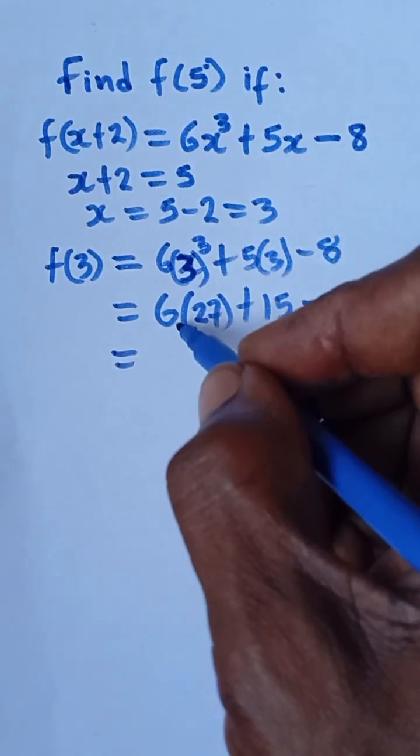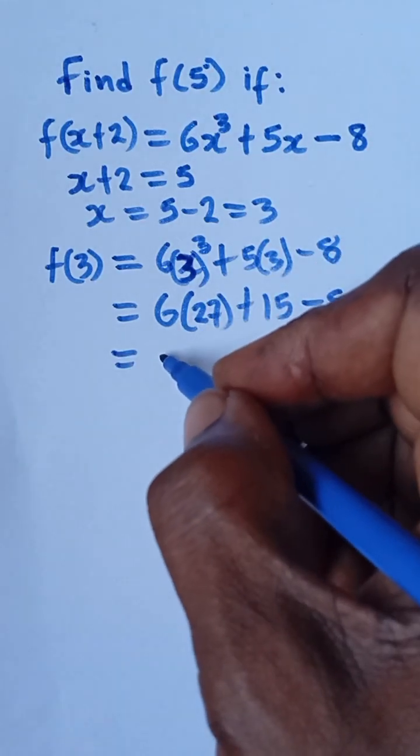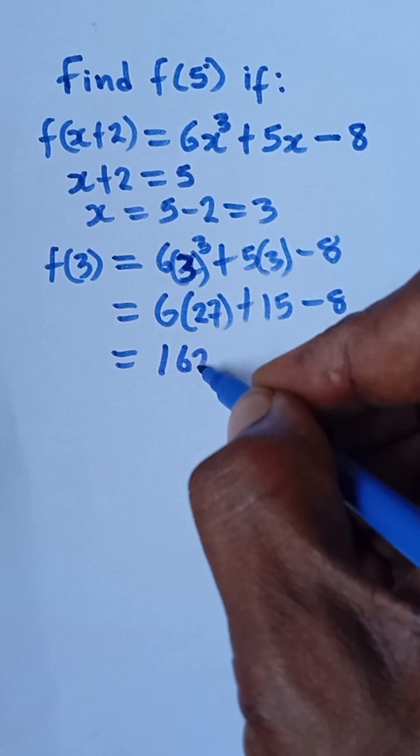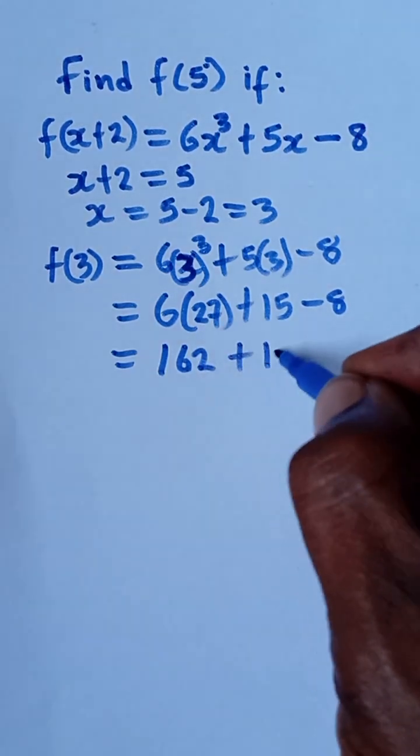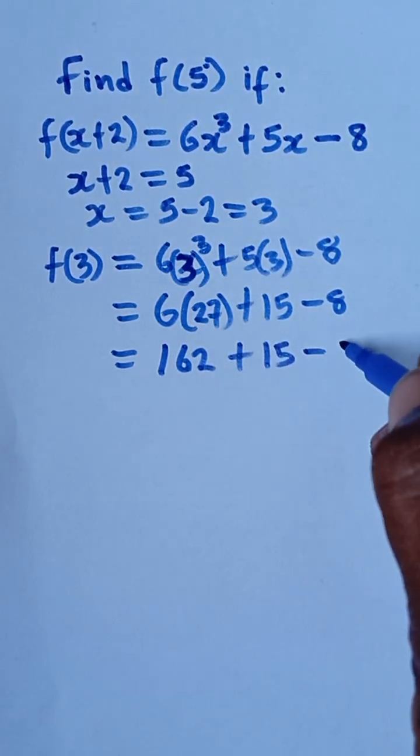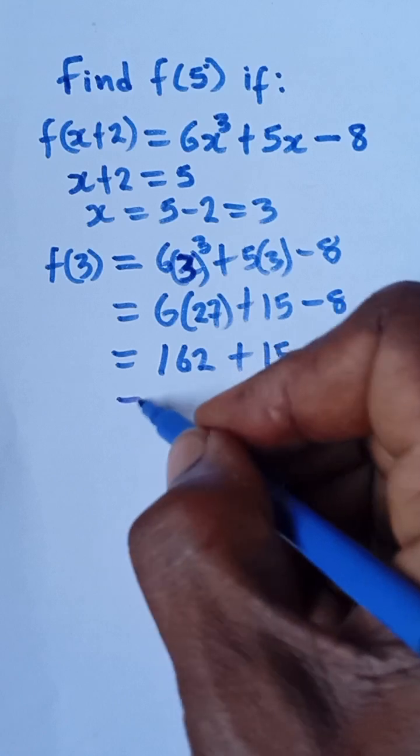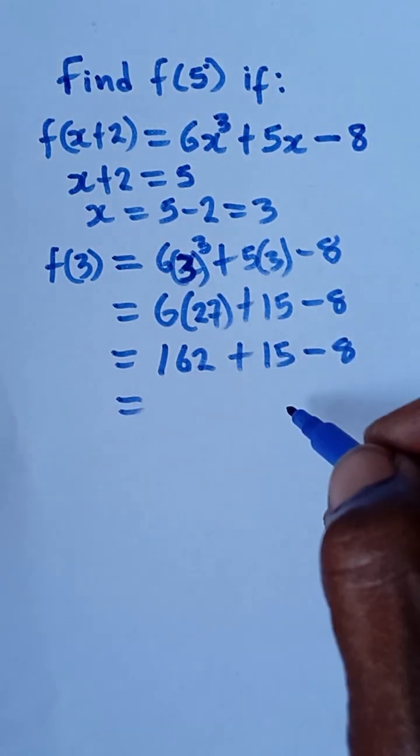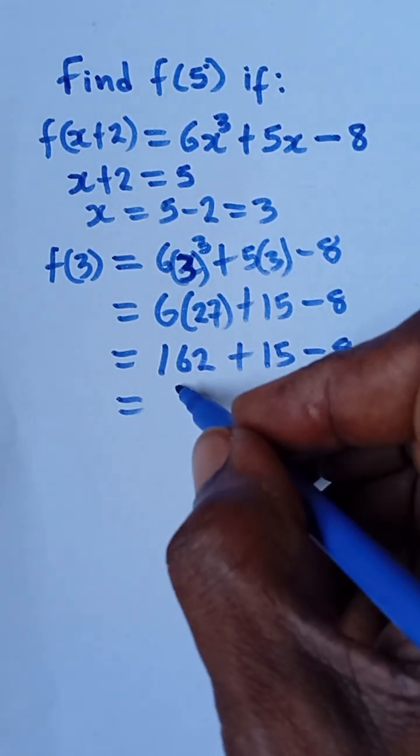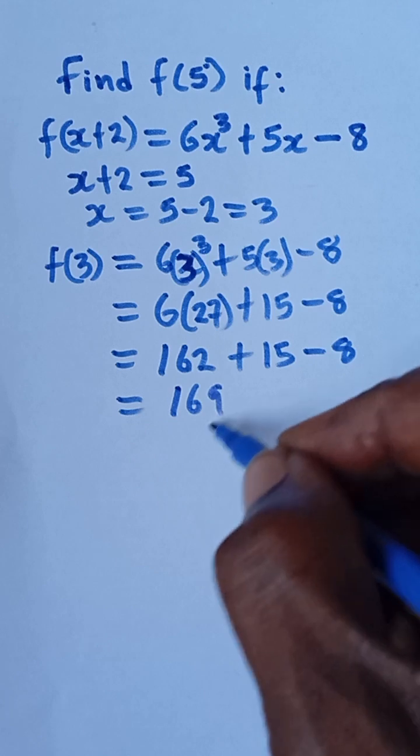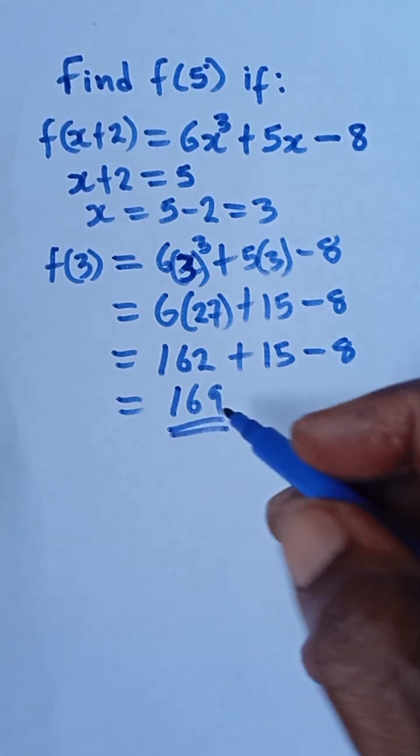And then that will give me 6 times 27 will give me 162 plus 15 minus 8. And then 162 plus 15 minus 8 will be equal to 169. So this is the final answer.